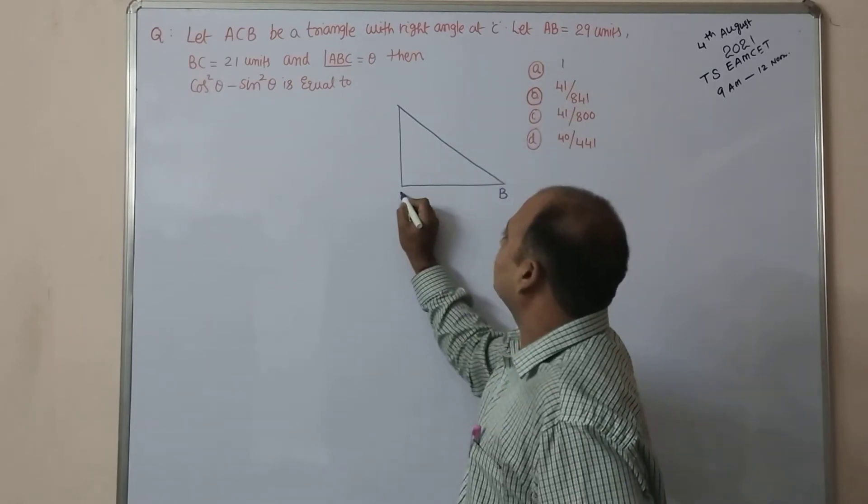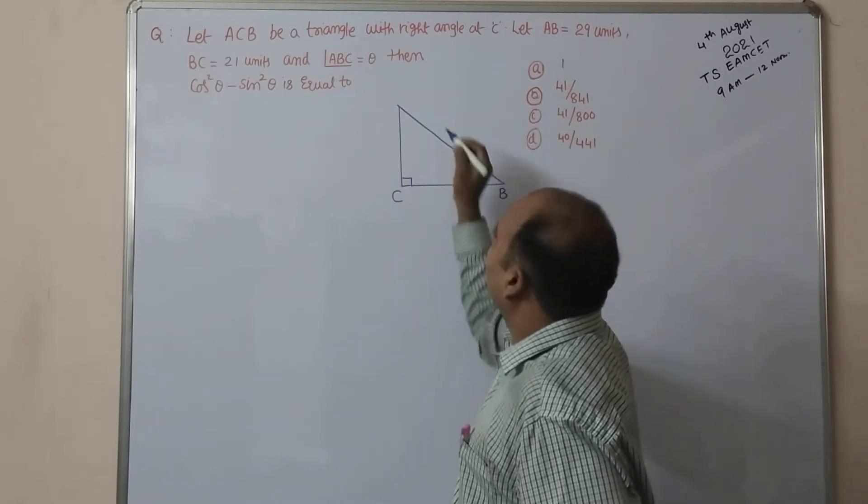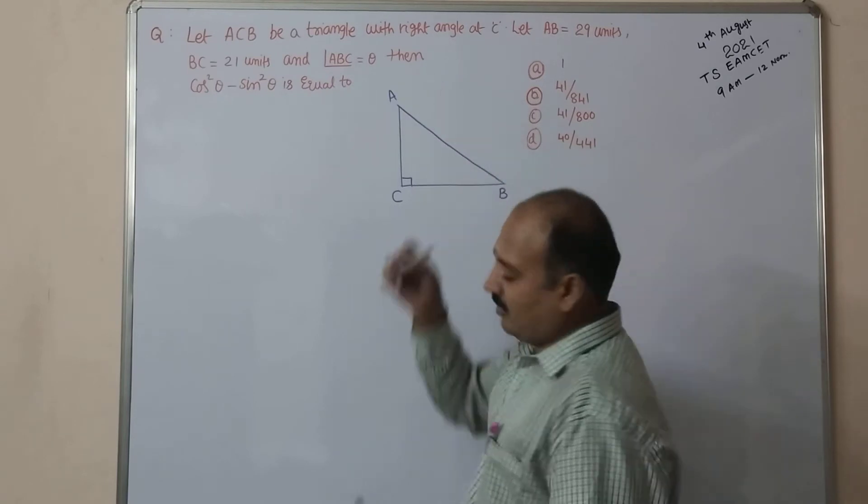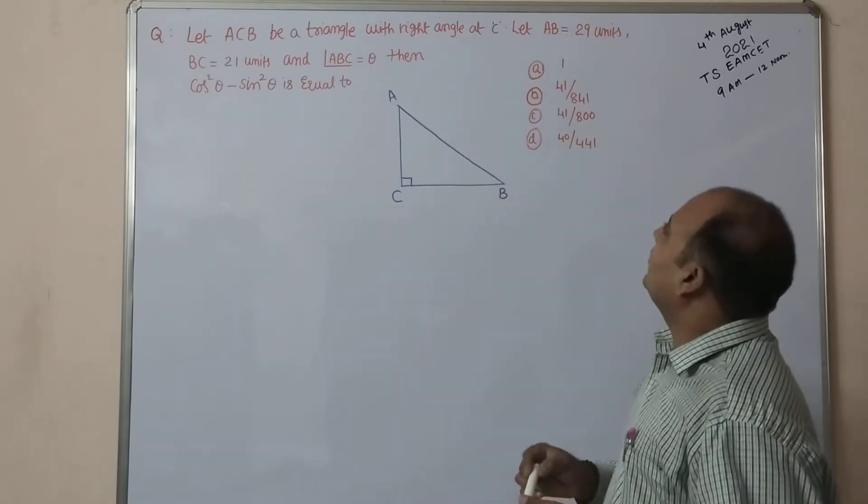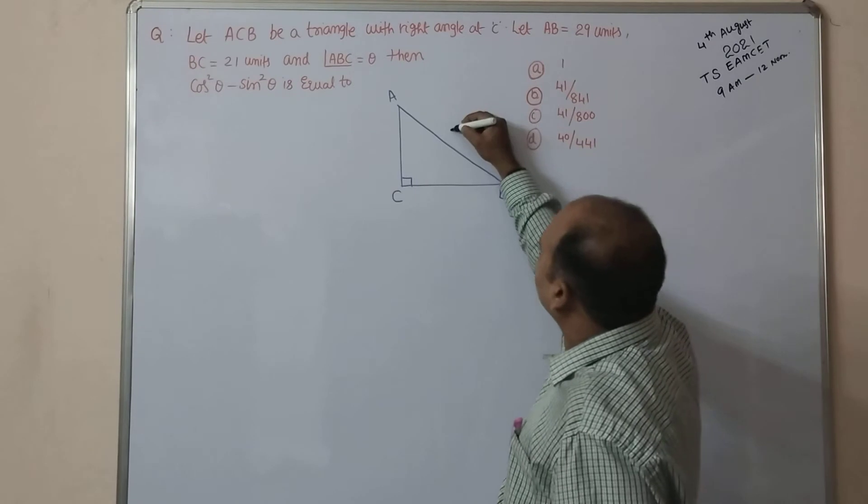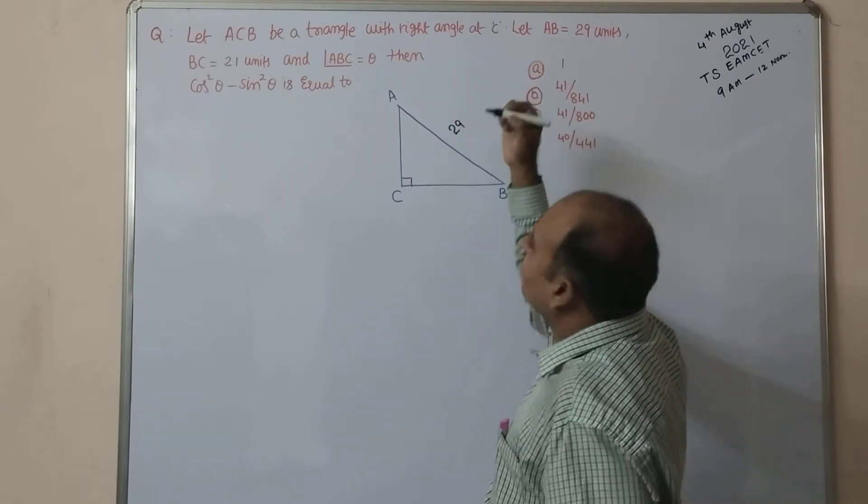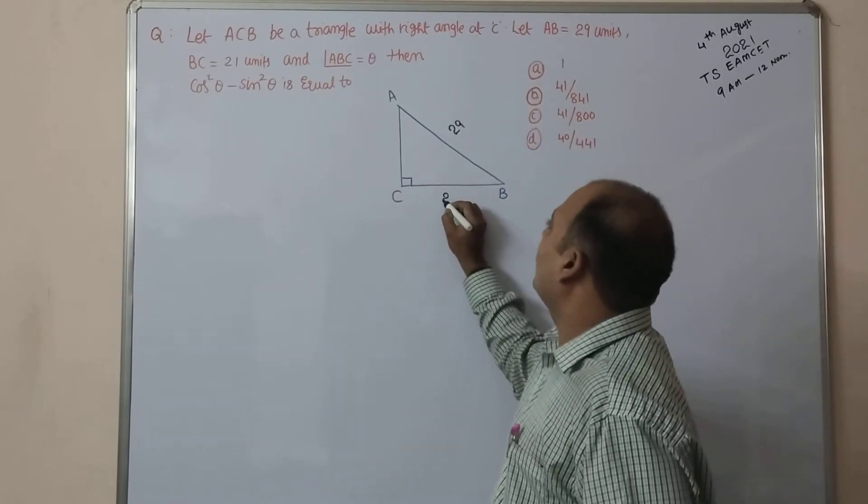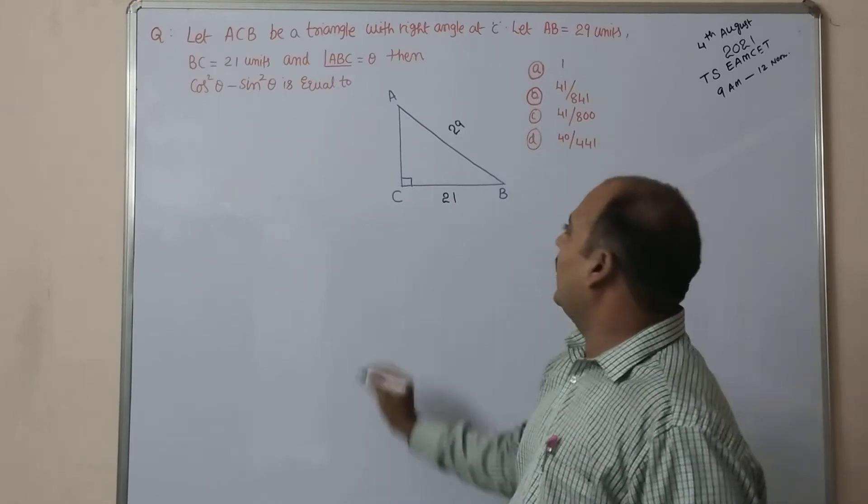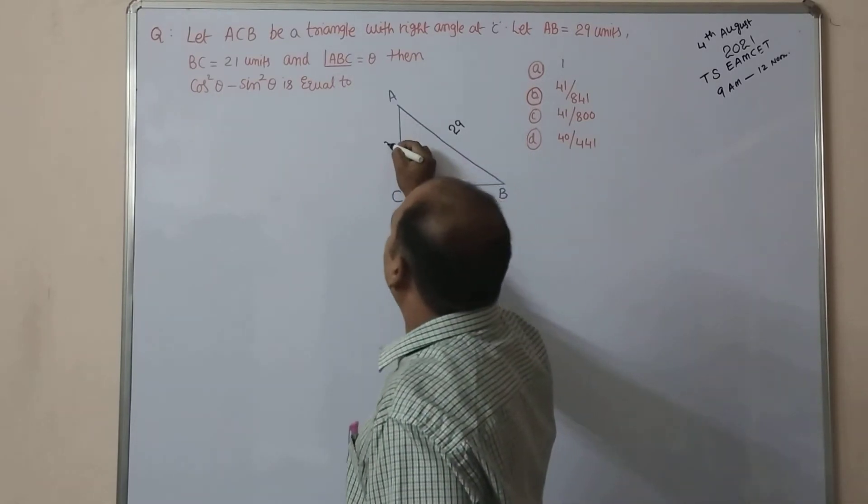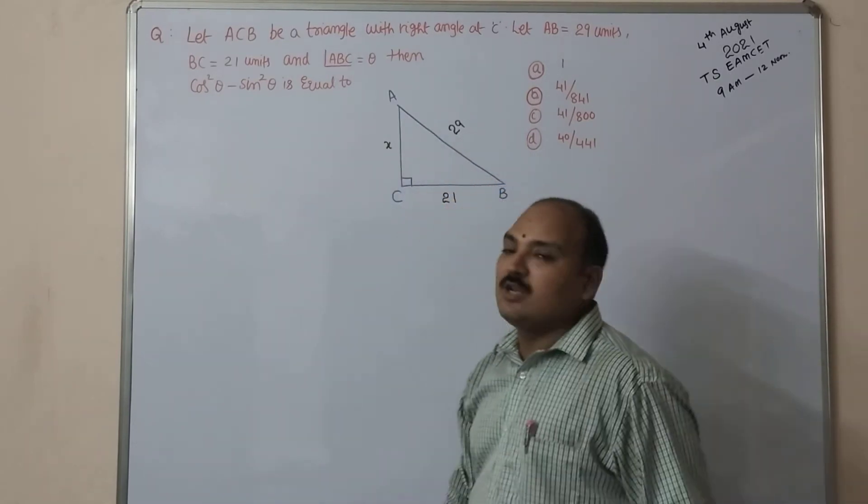Here it is B, rectangle at C they mentioned. So C will be here, and obviously A point will be here. In this, AB value is given as 29 units, and BC is given as 21, and AC we don't know, that is X I am assuming. By using Pythagoras theorem, X² + 21² = 29².